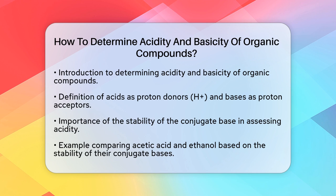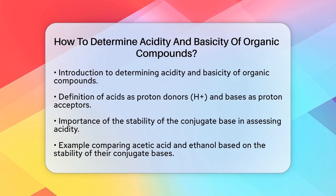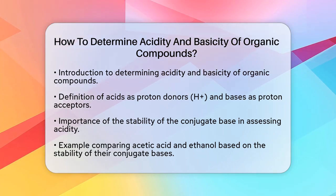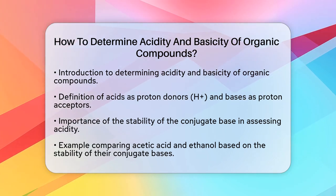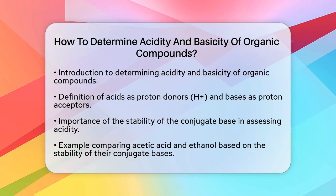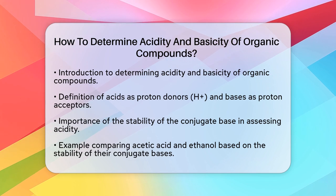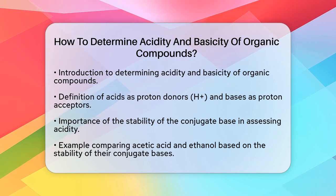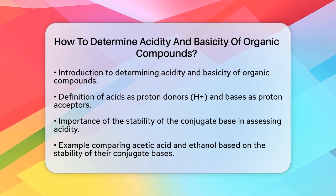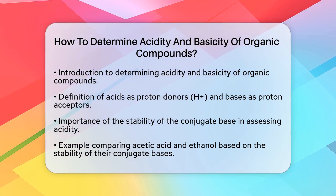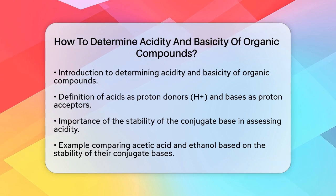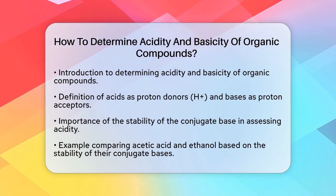Stability of the conjugate base. One of the most important factors is the stability of the conjugate base. A conjugate base is what you get when you remove a proton from an acid. The more stable the conjugate base, the stronger the acid.